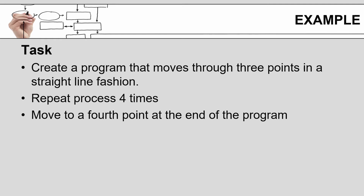Let's walk through an example program. This is fairly simple, similar to what you just saw. We're going to create a program that moves through three points in a straight line fashion, repeats that process four times, and then moves to a fourth point when the program is done before it terminates.